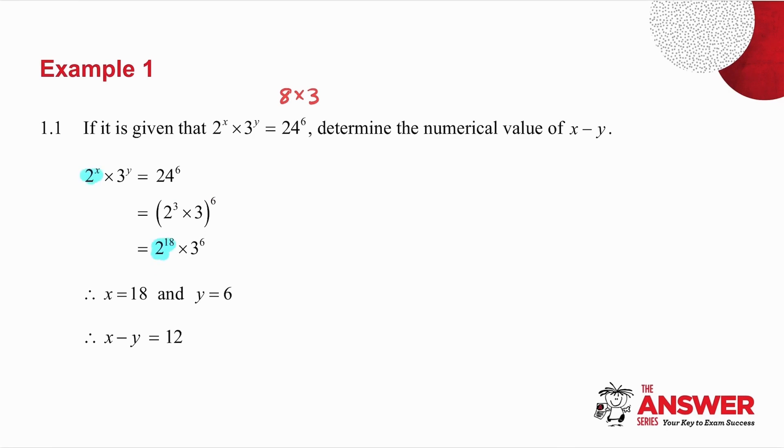Now, I equate like bases, so 2 to the x and 2 to the 18 must be equal. In other words, x must be 18. 3 to the y and 3 to the 6 must be equal. So y must be 6. They've asked me for x minus y, so 18 minus 6 is 12. That one wasn't too bad, so let's keep going.